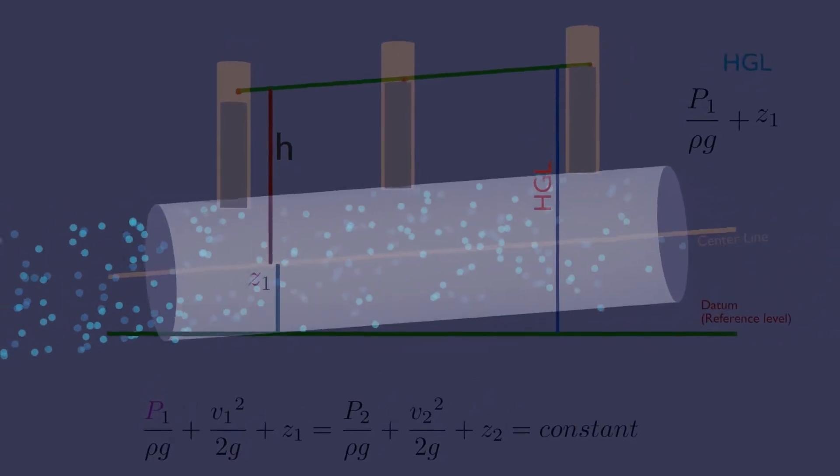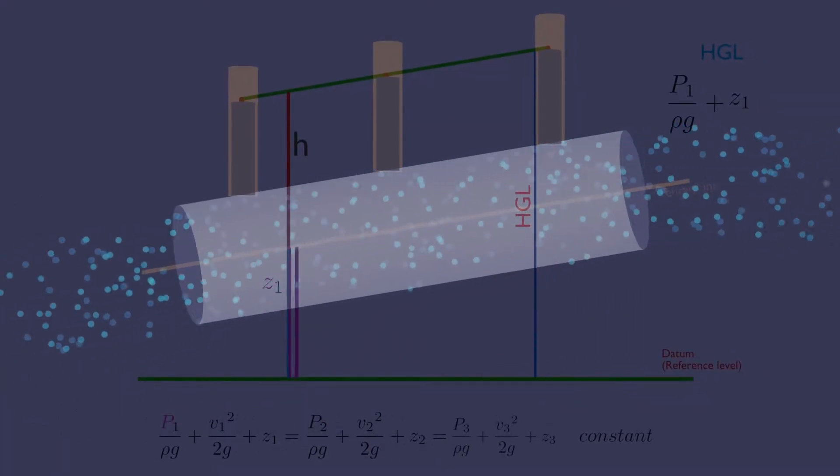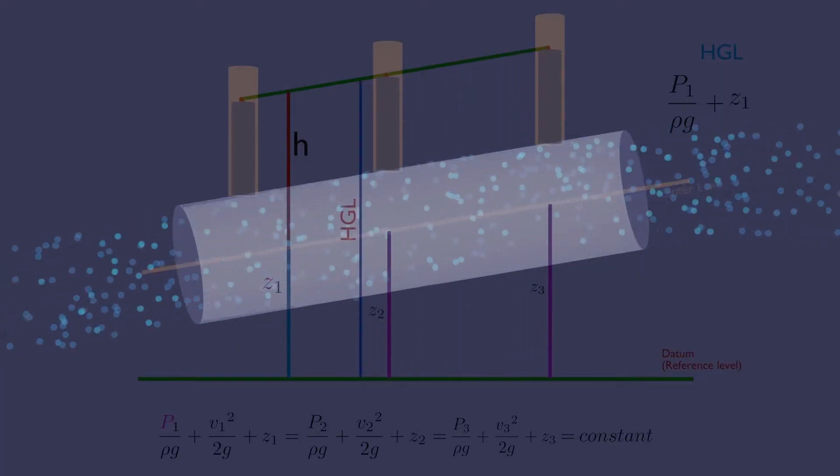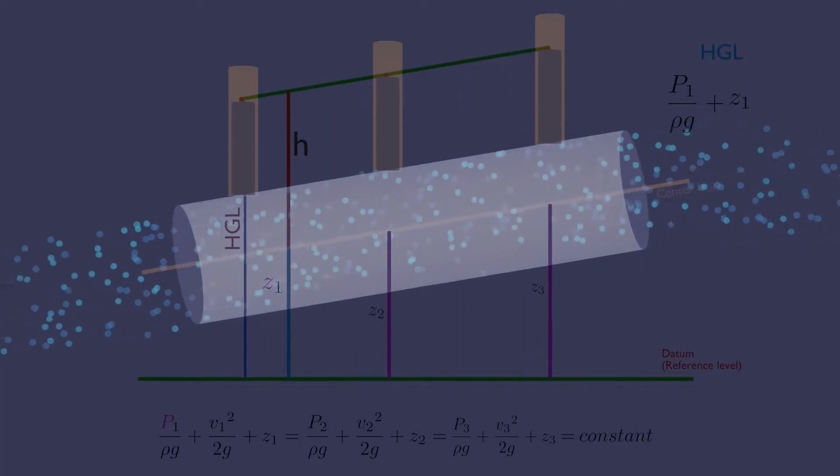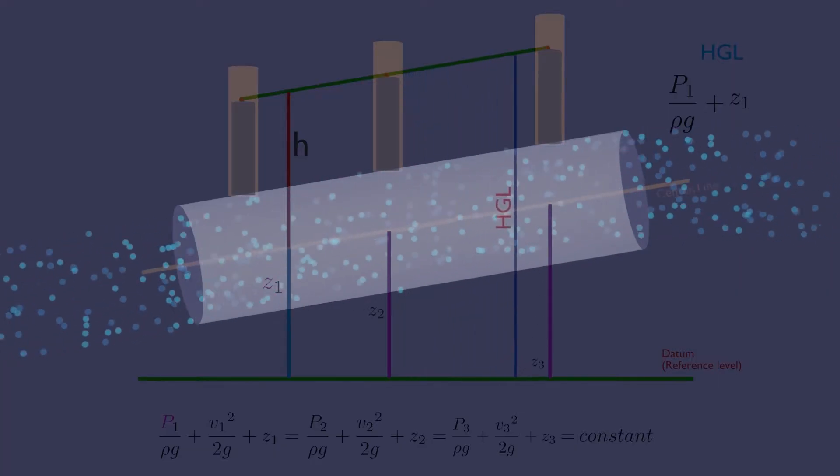Now what if the same pipe is inclined? In this case, change in elevation head will affect the hydraulic grade line. With an increase in elevation head, the hydraulic grade line increases.